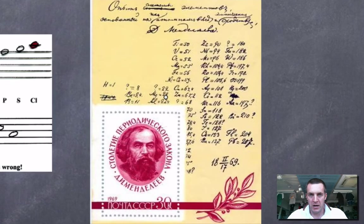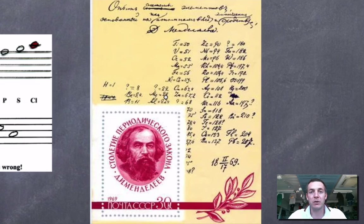Mendeleev was working around the same time, and they were kind of in competition with one another. But his ideas gained credibility sometime after he came up with them because he actually left some gaps for undiscovered elements. He was saying, we don't have an element that belongs in this group at the moment, but perhaps we'll discover one later, and if we do, then it ought to have such and such properties and such and such atomic weight.